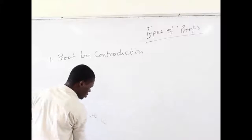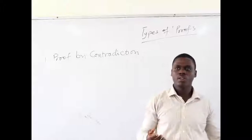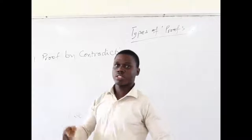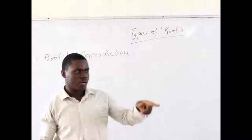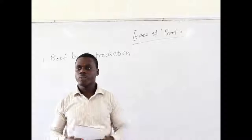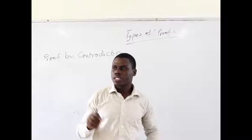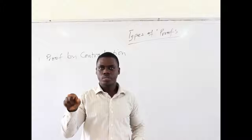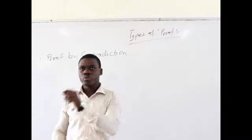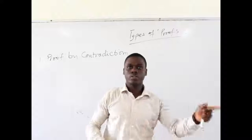Proof by contradiction — what are we actually trying to refer to? Let's take it from real life. We want to prove something by contradiction. It just means that whatever we are going to prove, we'll take its negative statement, begin from there, and see whether that negative statement will hold. At some point, we realize that negative statement is having a problem — it can't be true, it's false. So once it is proven to be false, we leave it and go back to the earlier statement and say, okay, that one is correct.